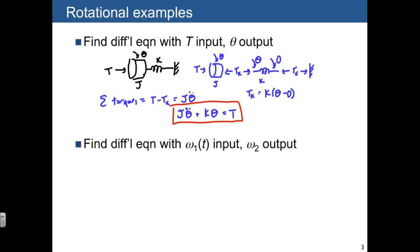Here's another example where we want to find a differential equation with omega 1 as input and omega 2 as output. And we're going to have two masses here. Here I'll label this J1 with a displacement,